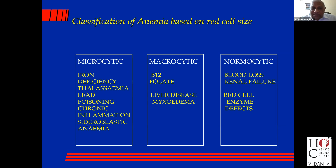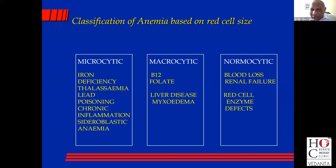The two main causes of microcytic anemia are iron deficiency and thalassemia. The rest of the causes — like lead poisoning, chronic inflammation, and sideroblastic anemia — are not common. The main cause of macrocytic anemia is B12 and folate deficiency. Liver disease and myxedema can also cause a large red cell.